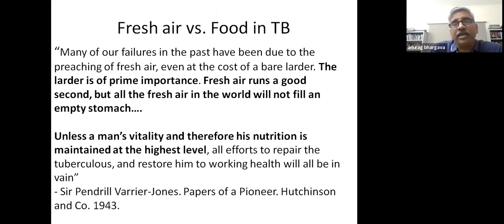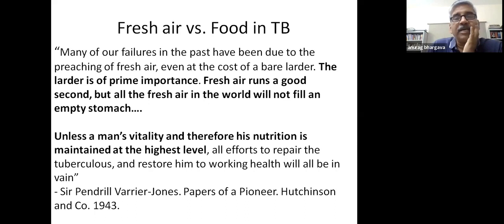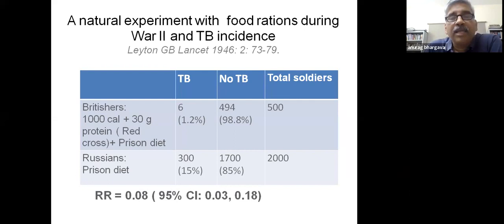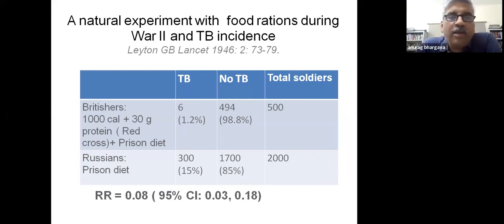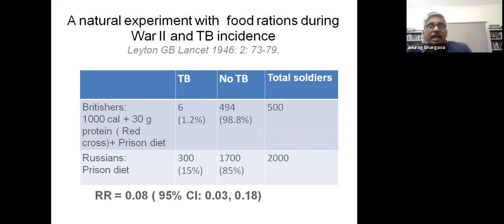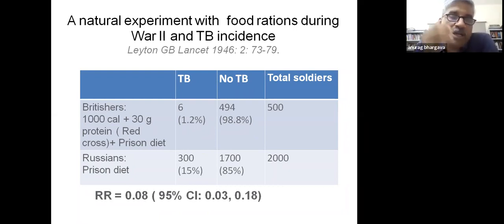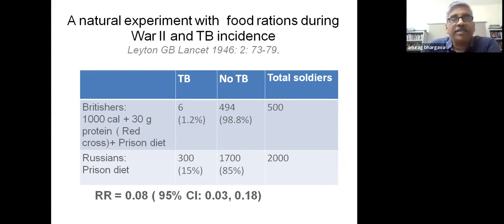Varrier-Jones stated that nutrition is vital for protection against disease, and fresh air is only the second most important thing. In the pre-chemotherapy era, a natural experiment is often quoted: British soldiers given Red Cross rations providing extra calories and protein had a 90% lower incidence of TB compared to Russian soldiers living in the same conditions but receiving a prison diet.